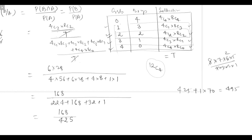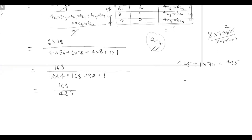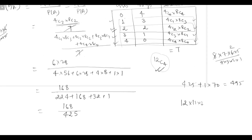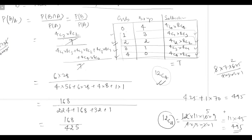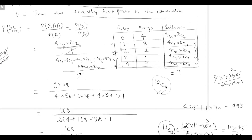Let's verify: 12C4 = 12×11×10×9/(4×3×2×1) = 495. So the sum of all individual cases equals 495, which confirms it equals 12C4. This verifies our sample space is correct.